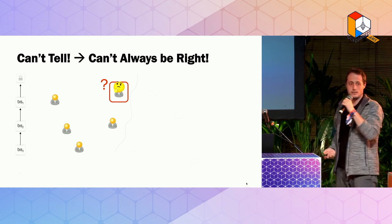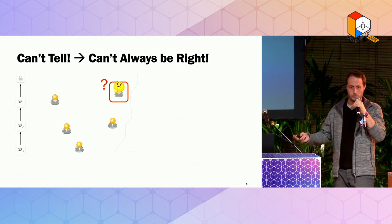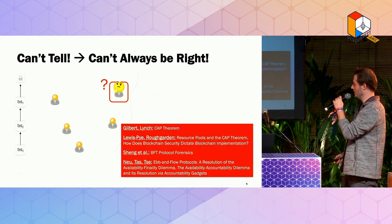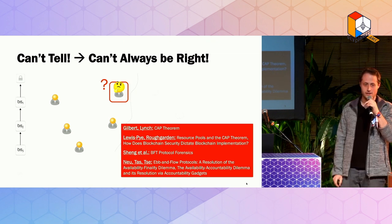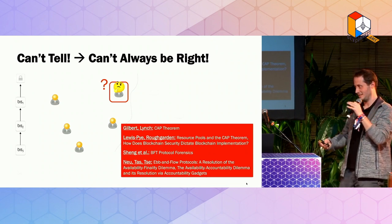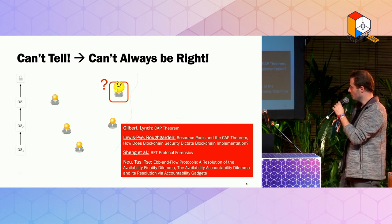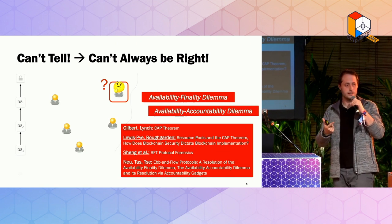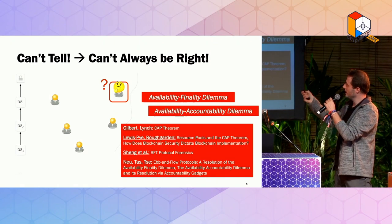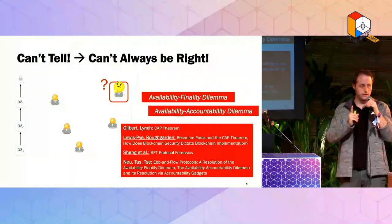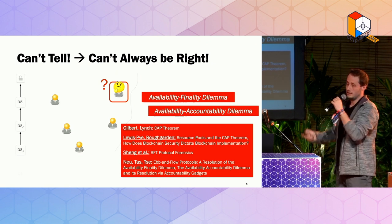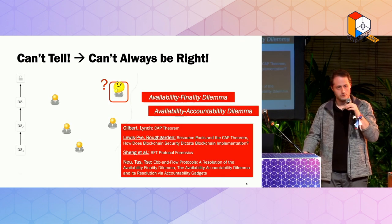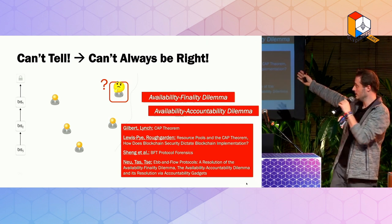Since us here in Amsterdam can't tell the difference between a network partition and a large-scale power outage event, we cannot always make the right decision. There is a long list of literature on this phenomenon at various levels of formalization. The bottom line is there are two dilemmas here. We've mentioned three properties: availability, accountable safety, and liveness. From availability and finality, you can only have one in a single ledger protocol. And from availability and accountability, you can only have one. Your ledger needs to make a decision.